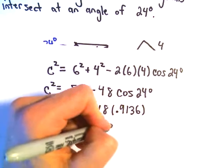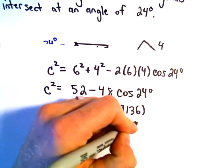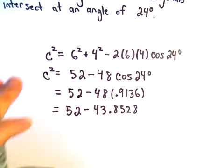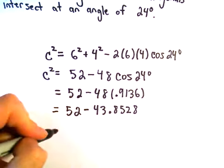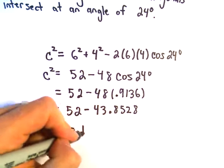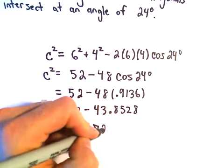...we'll get 43.8528. And now if we just subtract, so 52 minus 43.8528, I'm getting that to equal 8.1472.